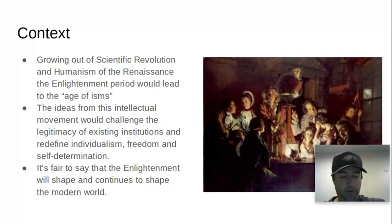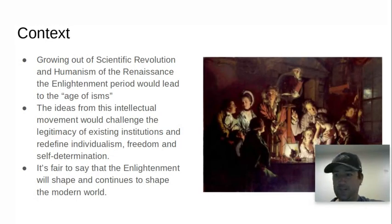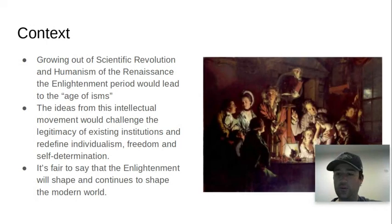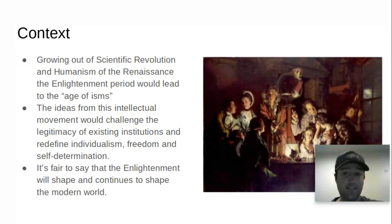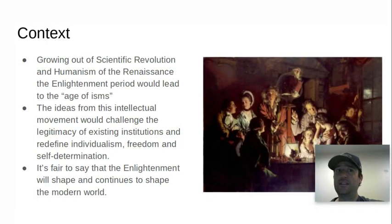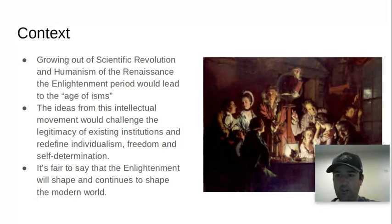The Enlightenment grows out of the Scientific Revolution and also out of humanism during the Renaissance period. It would lead to this age of 'isms' — liberalism, capitalism, socialism. It really creates ideas about how the world order works and people's places in it. It is an intellectual movement that challenges the legitimacy of existing institutions. Things like divine right theory and the role of the church become challenged, and it redefines individualism, freedom, and self-determination.